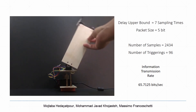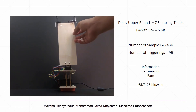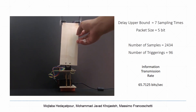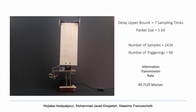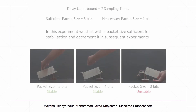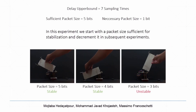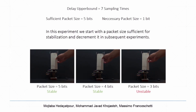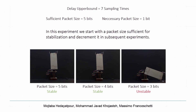In the second experiment, we set the channel delay upper bound to seven sampling times. Because the upper bound of the delay is increased, uncertainty increases and timing information becomes outdated. Therefore, more information transmission rates are required to stabilize the plant. In the third experiment, the delay upper bound is set to seven sampling times. From the proposed method, we determine sufficient and necessary packet sizes for stabilization to be five and one bits respectively.